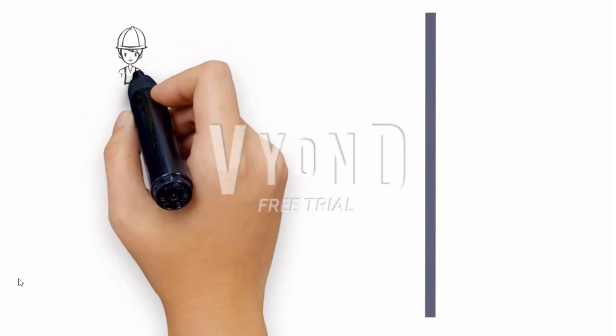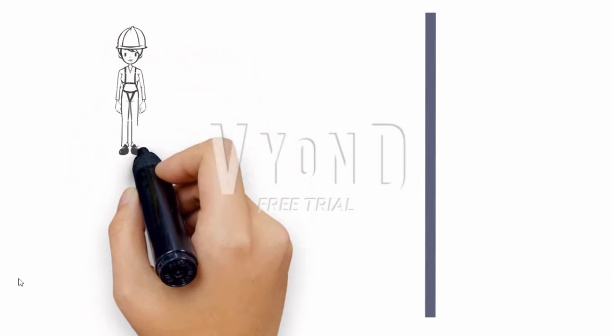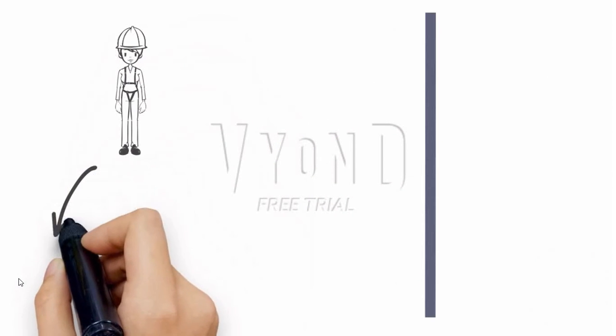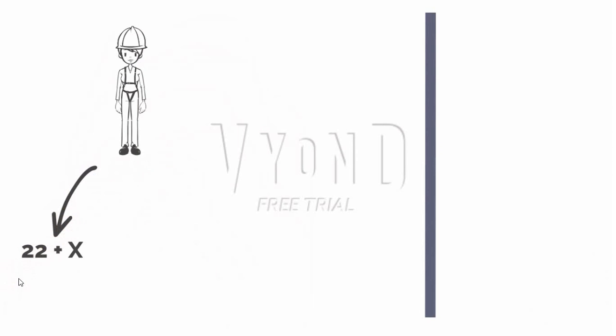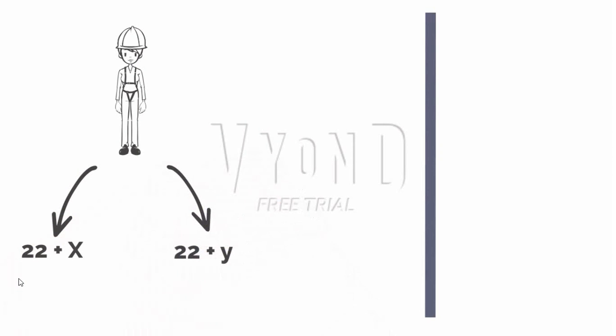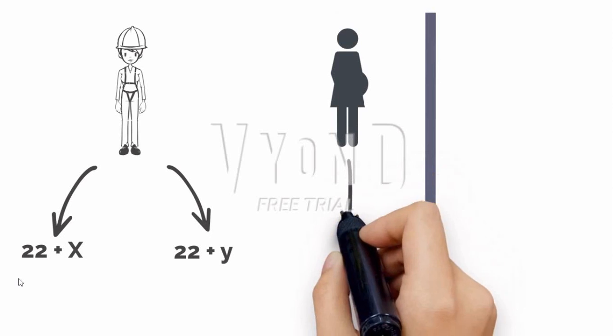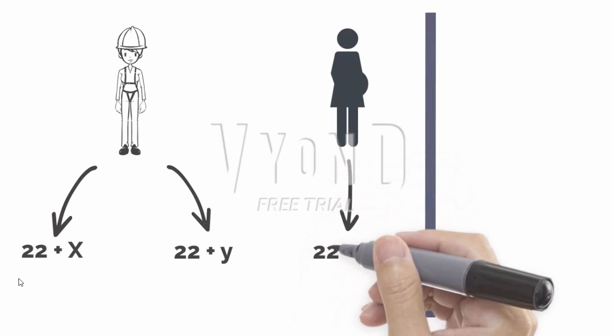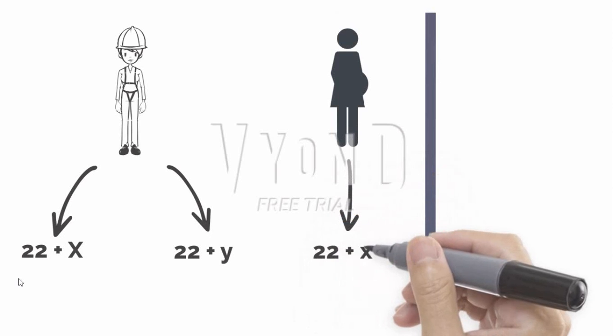That's why the male produces by meiosis two types of sperm: 22 plus X and 22 plus Y, while the female produces just one type of ovum: 22 plus X.